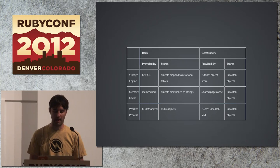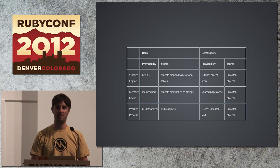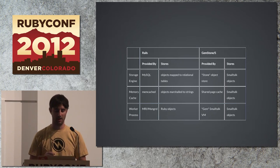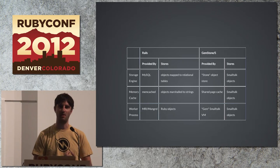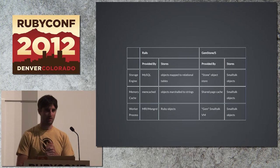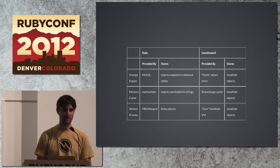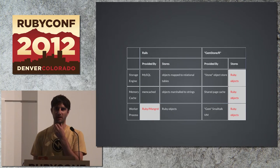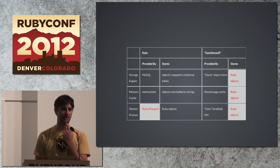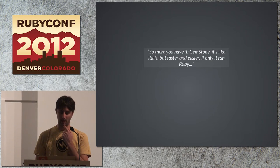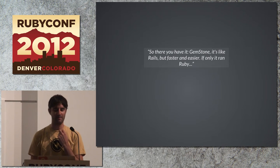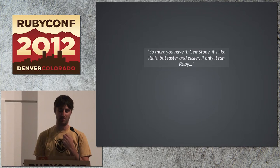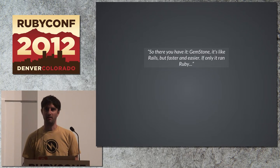He compared how we use a relational database to store our objects. We might use Memcached back then, or Redis nowadays to do some type of shared memory caching, and then we have our actual app servers. He thought it would be really interesting to try to get this working in Ruby, ending his blog post saying: 'So there you have it — Gemstone, it's like Rails, but faster and easier, if only it ran Ruby.' This sparked a really interesting conversation that ended up with this product called Maglev.